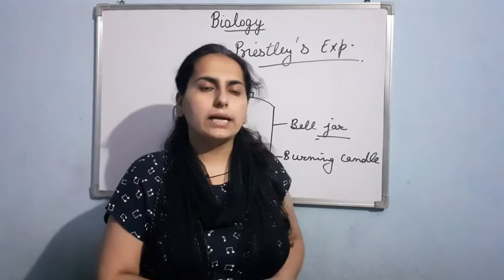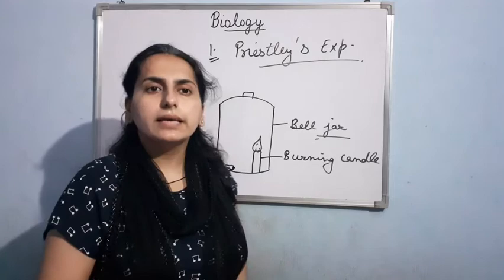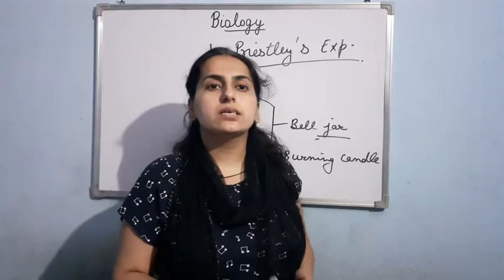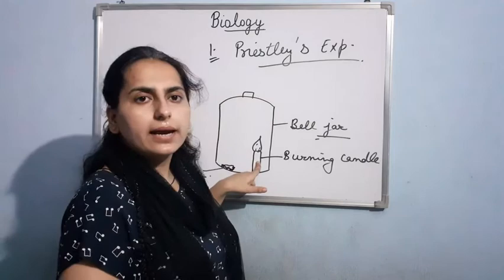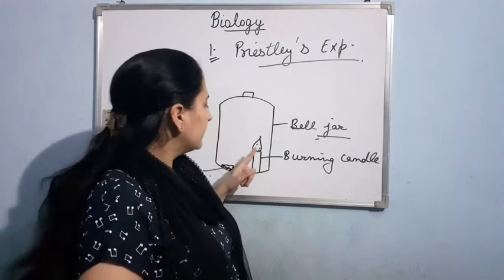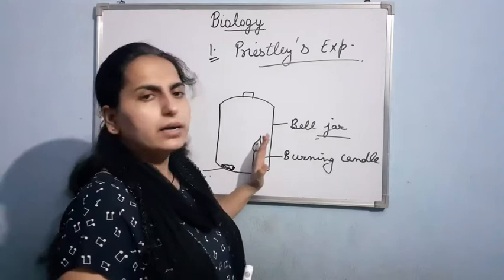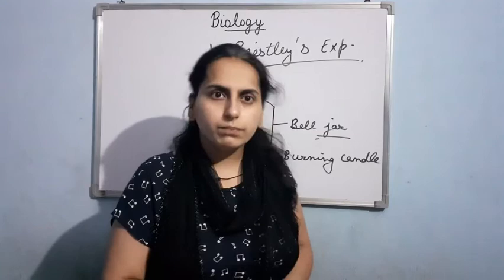Now after some time, what he observed? After some time, this burning candle got extinguished, and the mouse died. Now the question is, why? For this, he gave an explanation that this burning candle and this mouse — the mouse during respiration and the burning candle during combustion — both of them are using a component of air. He said basically that the burning candle and the mouse are damaging the air.